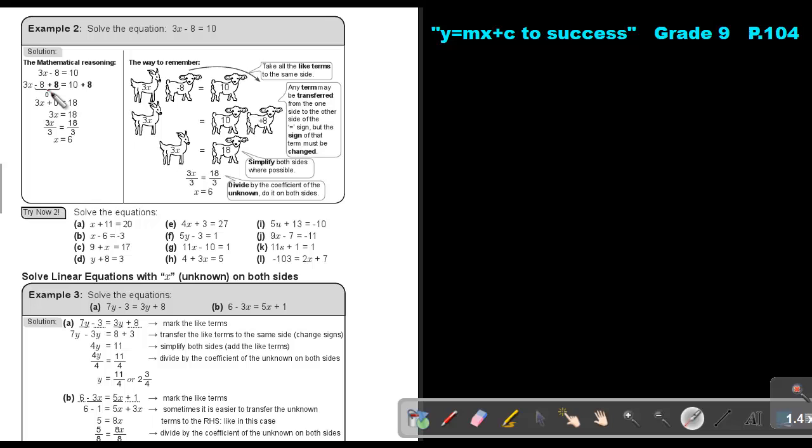As we did in grade 8, to get rid of this negative 8, we will add 8, the additive inverse. So if we add 8 on this side, we must also add 8 on this side. This will cancel out and we have 3X and 10 plus 8 is 18. Now we divide by 3 and we divide by 3. And we will get that the value of X will be equal to 6.